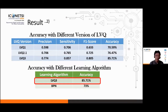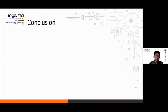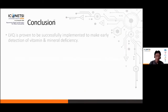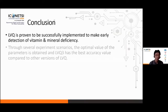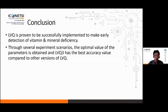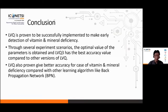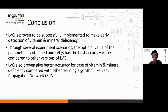As our conclusion, LVQ is proven to be usable for detection of vitamin and mineral deficiency. Through several trial-and-error experiments, we obtained the optimal parameter values. The best version of LVQ for our case is LVQ version 3, and when compared with the backpropagation network, LVQ also shows better accuracy in detecting vitamin and mineral deficiency.